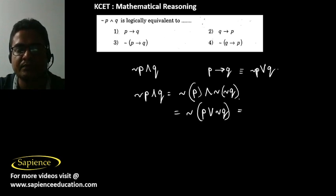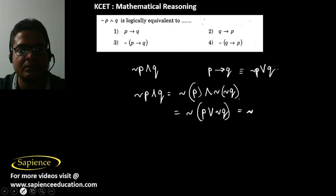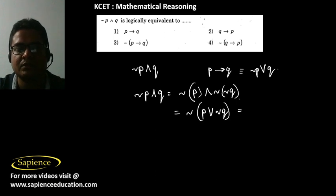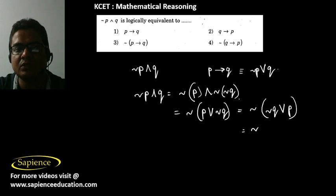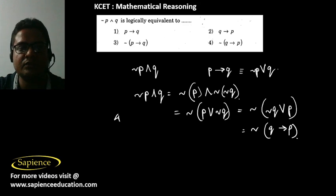Applying De Morgan's law further, not of not of (P or not Q) simplifies, and working through the double negations, option 4 is the correct answer.